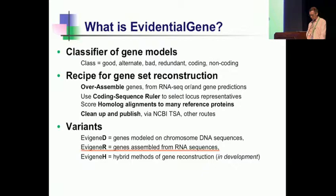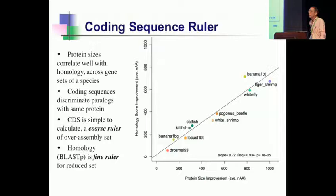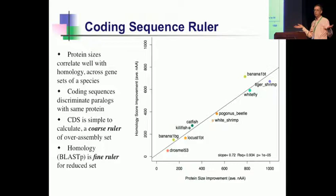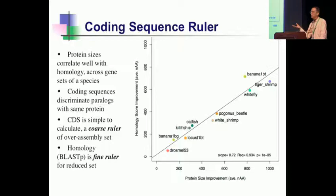The coding sequence ruler I'm using is a part that most others are not using, and I think it's a critical part. Many other transcriptome assembly products look at total transcript size, variations on N50, reads mapped — those are technical measures. I believe the coding sequence measurement is a much more biologically useful one. There's a close correlation between the size of the coding sequence you recover and the homology alignment to reference proteins, and that's important.